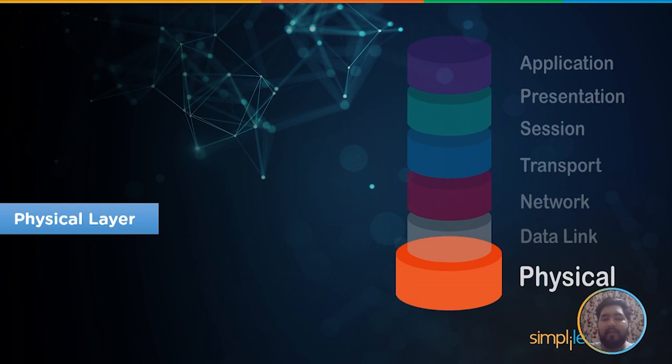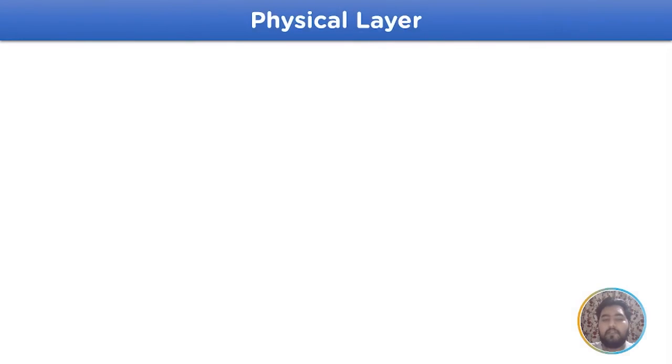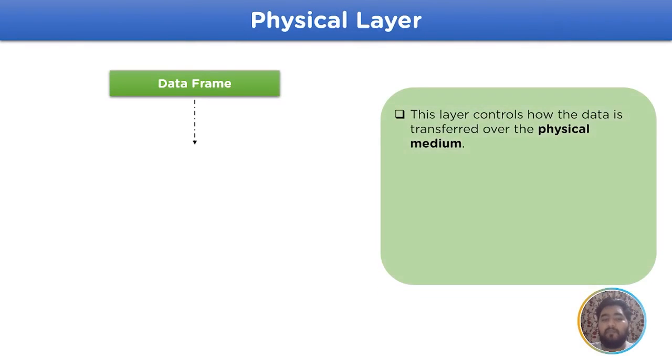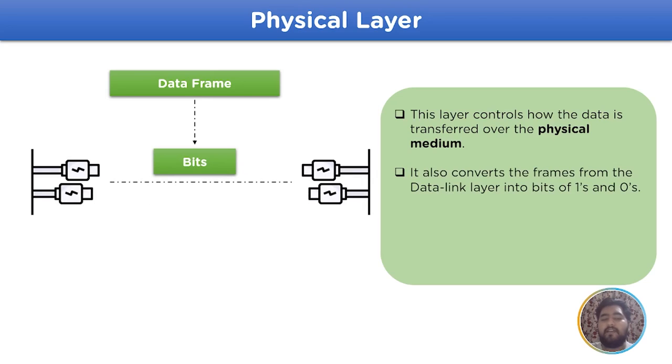Now, let's move on to the main heading for the session that is what is the physical layer. The physical layer provides and is responsible for physical mode between the sender and the receiver node in the data transmission. This layer converts frames received from the data link layer into bits, that is in terms of ones and zeros to be transferred.